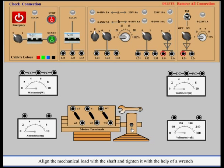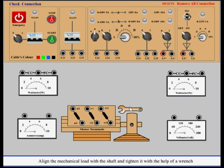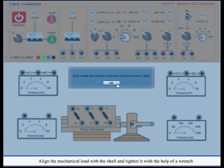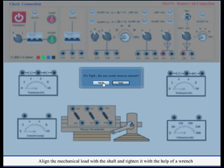Align the mechanical load with the shaft and use a wrench to tighten the screw. Now rotate the wrench clockwise until the screw is tight. It's tight. Do you want to remove the wrench? Yes.